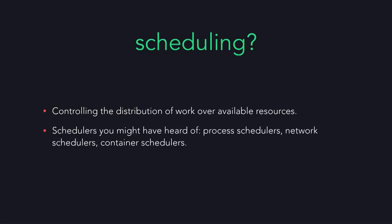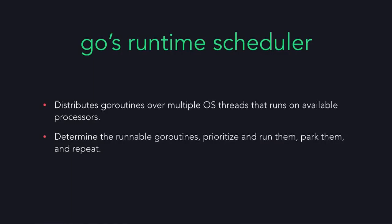So let's begin with the basic question: what is a scheduler? In its most basic sense, scheduling is distributing some work over the available resources. You've probably heard of other schedulers before, such as the operating system process scheduler that manages processes over available CPUs, network schedulers, or container schedulers such as Kubernetes, which schedules containers over a fleet of machines. Go has a runtime scheduler, and the runtime scheduler's primary duty is to distribute Go routines over the operating system threads that run on all available CPUs.